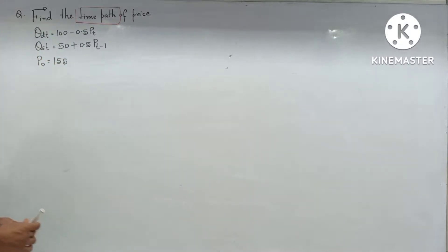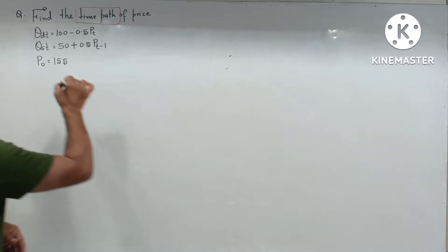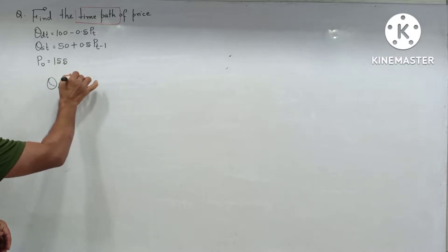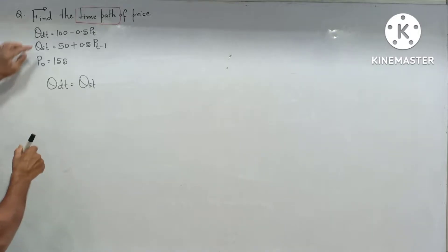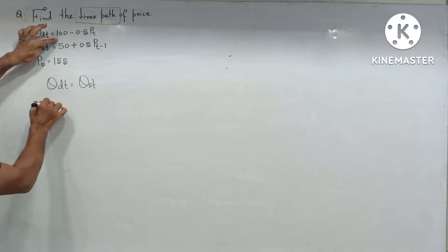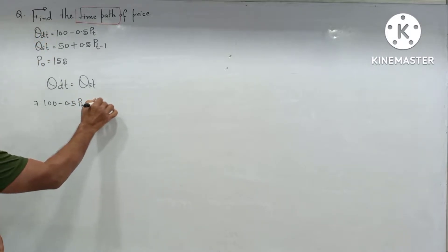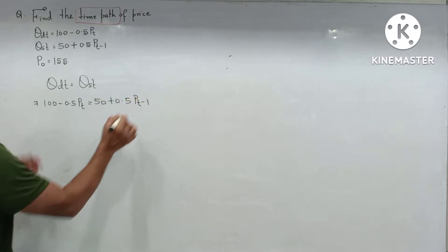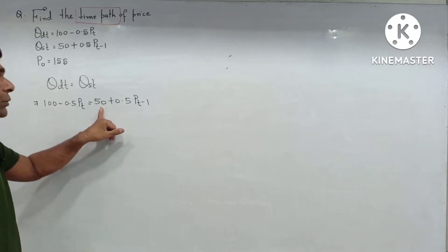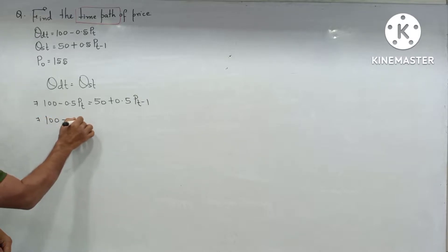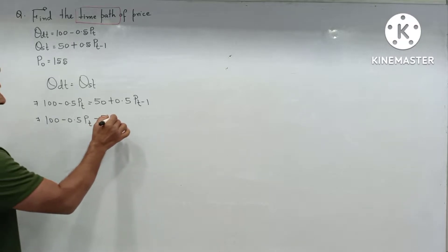Let us start the solution. We know that quantity demanded equals quantity supplied at the equilibrium point, so we need to equate q_d(t) = q_s(t). Substituting the values given: 100 - 0.5·p(t) = 50 + 0.5·p(t-1). The terms on the right-hand side are shifted to the left-hand side: 100 - 0.5·p(t) - 50 - 0.5·p(t-1) coming from the RHS.